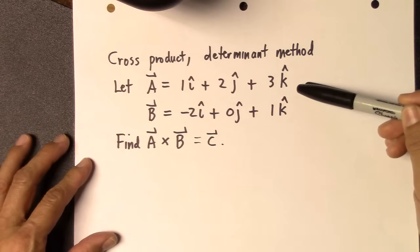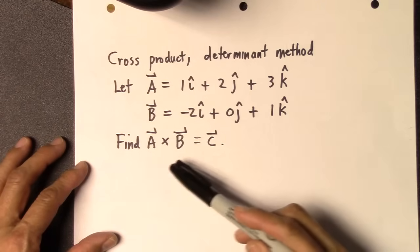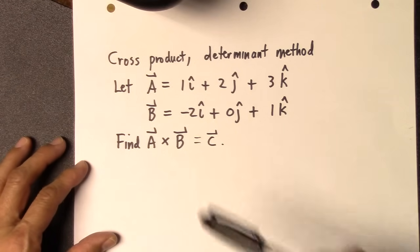So I'll do it with an example. Suppose you have two vectors, A and B, written as such, and you want to figure out A cross B, which is equal to C.